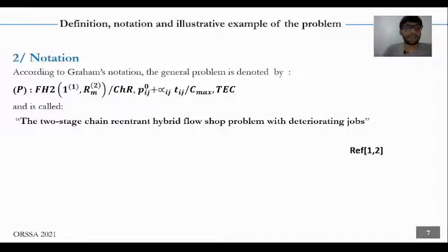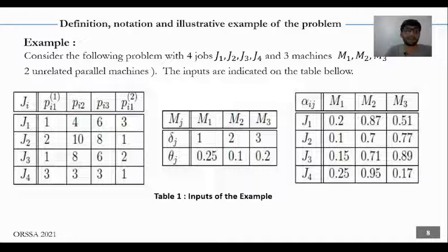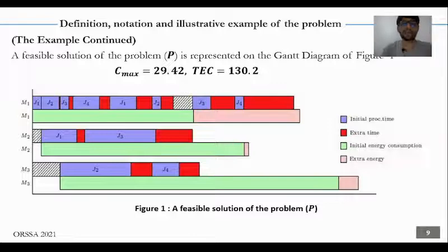We go here to the notation of our problem. According to Graham's notation, the general problem is denoted by this notation, and it is called the two-stage chain-reentrant hybrid flow-shop problem with deteriorating jobs. We present on this slide an example with four jobs and three machines. The input of the example is presented in the following tables. A possible solution is represented on the Gantt diagram with C_max equals 29.42 and TEC equals 130.2, where the initial processing time is in blue, extra time in red, initial energy consumption in green, and extra energy in pink.